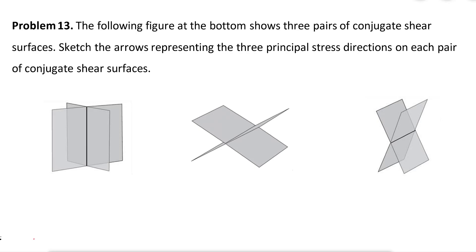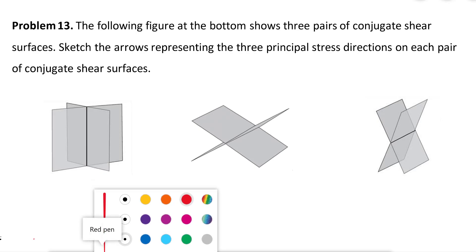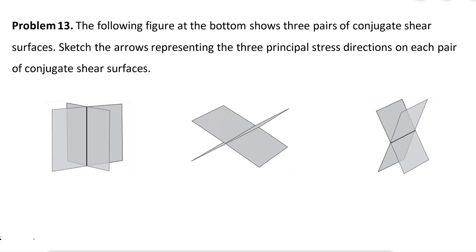The conjugate fractures have one intersection, and that intersection is always going to show us the direction of Sigma 2. It doesn't matter in which direction these two conjugates are oriented — the intersection is always going to be Sigma 2.